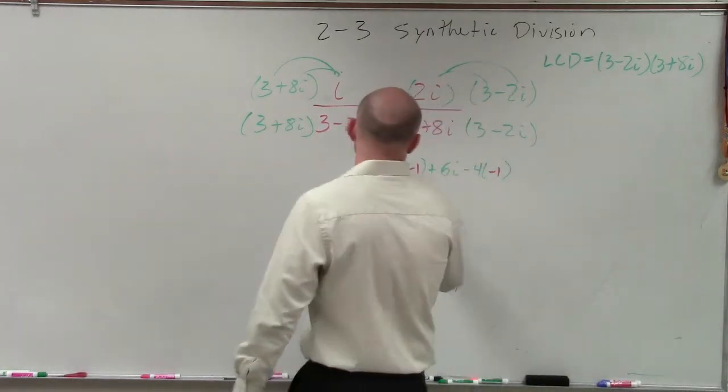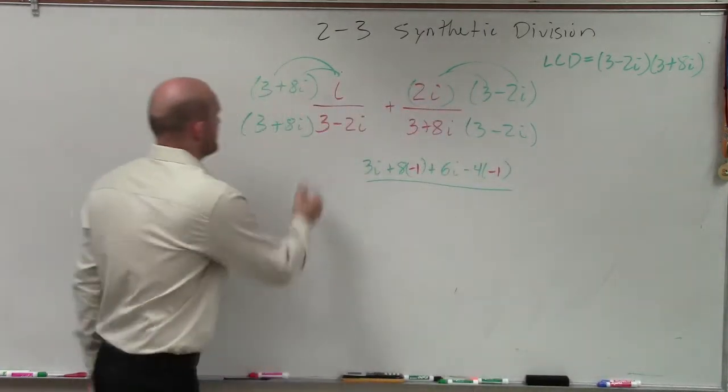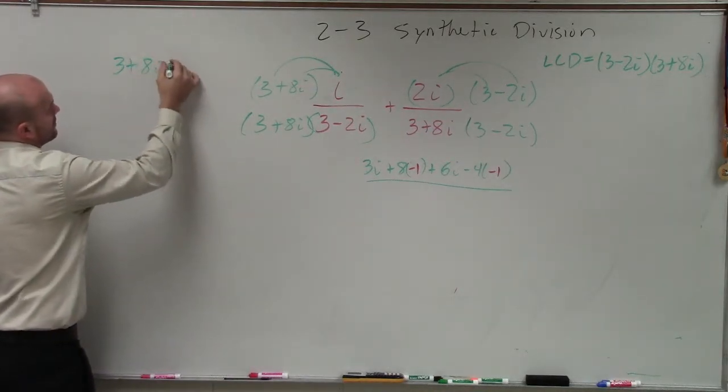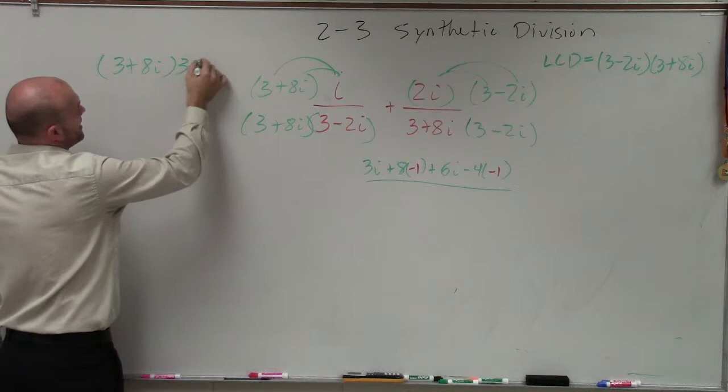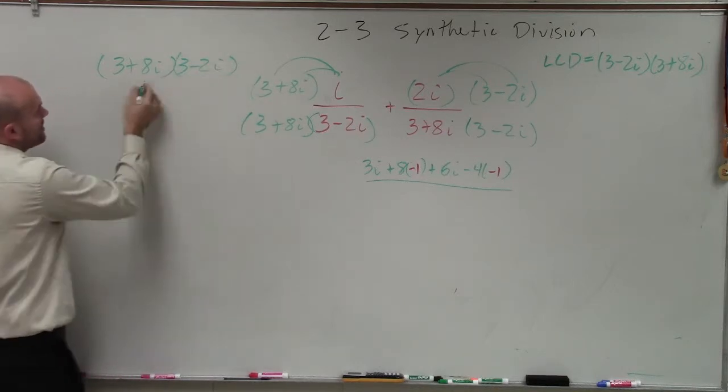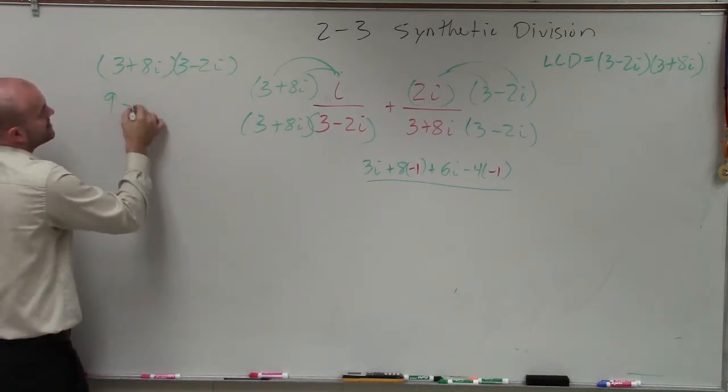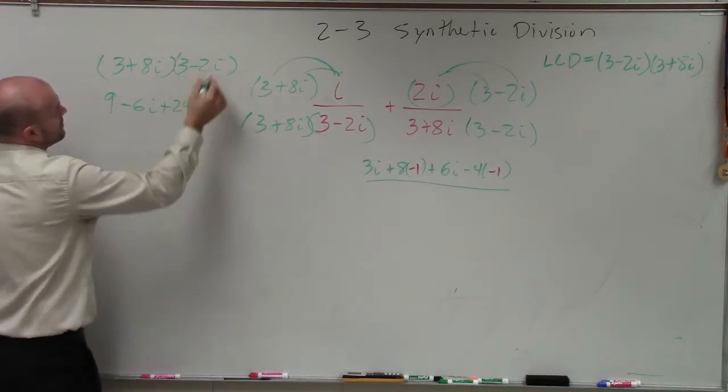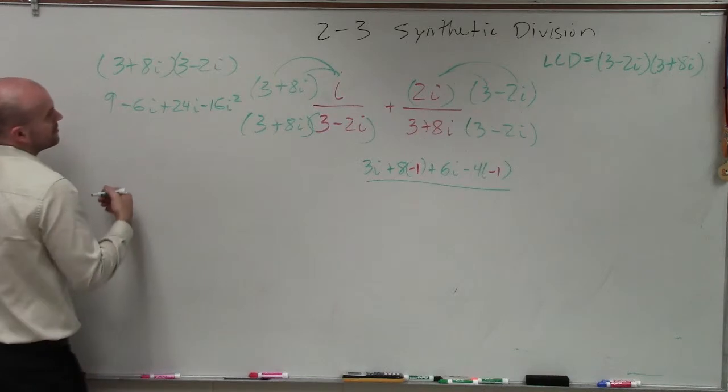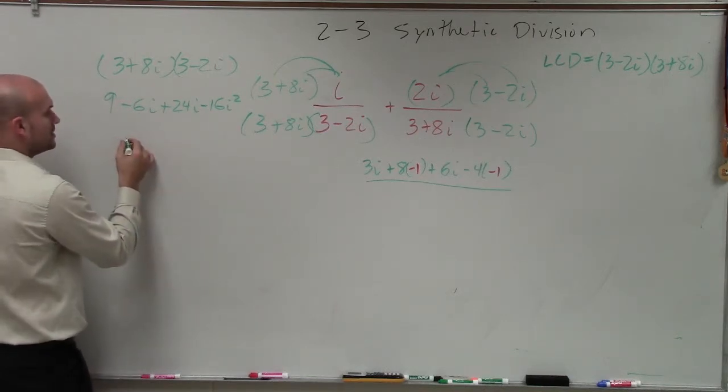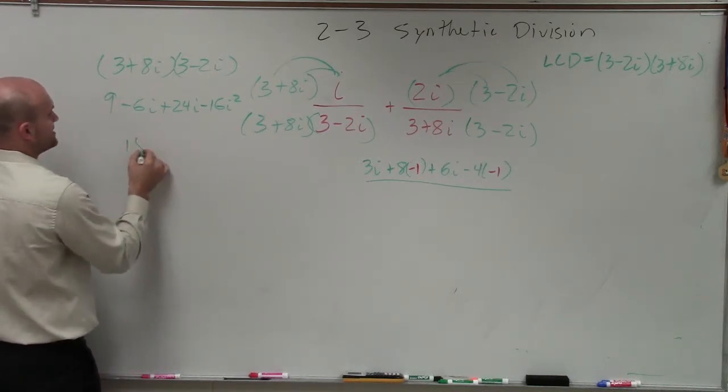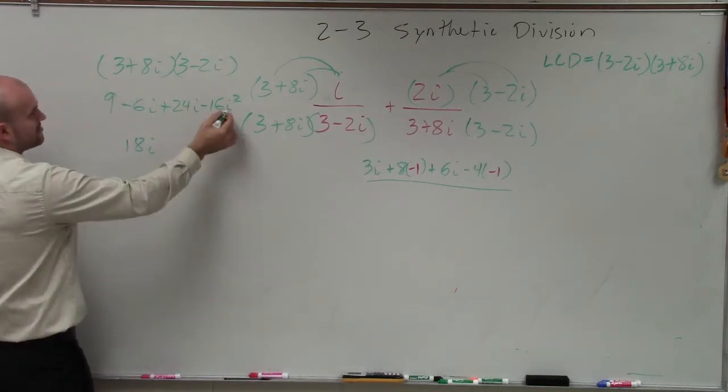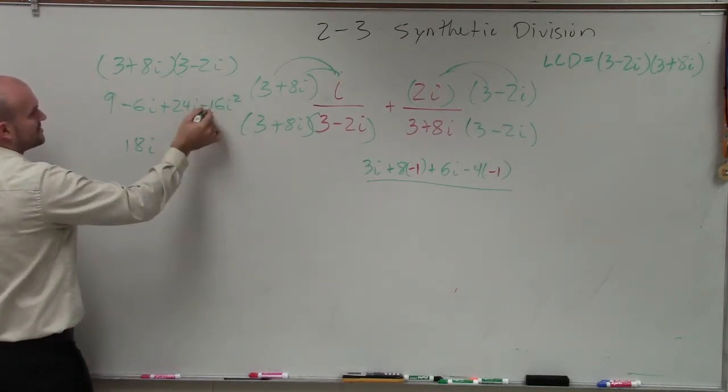And our denominator, we need to apply FOIL. So I'll do that work over here. 3 plus 8i times 3 minus 2i. By applying FOIL, I get 9 minus 6i plus 24i minus 16i squared. So therefore, it becomes 18i plus, that becomes a negative 1, so that's positive 16 plus 25.